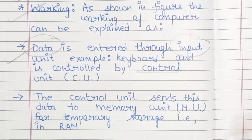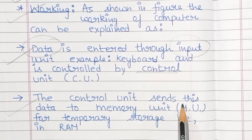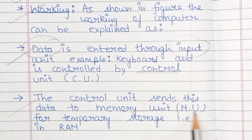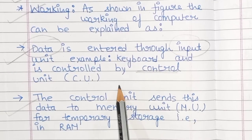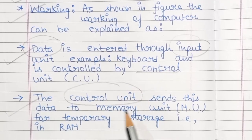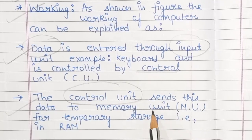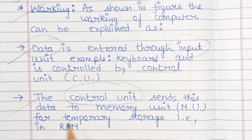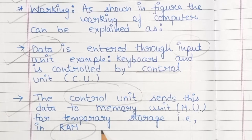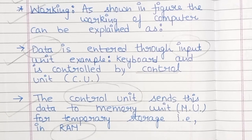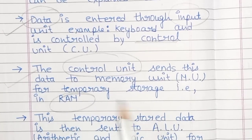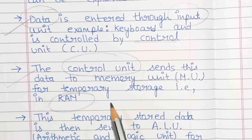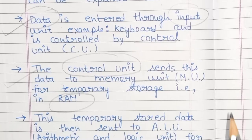The control unit will send this data to the memory unit for temporary storage — for example, it will be sent to RAM.